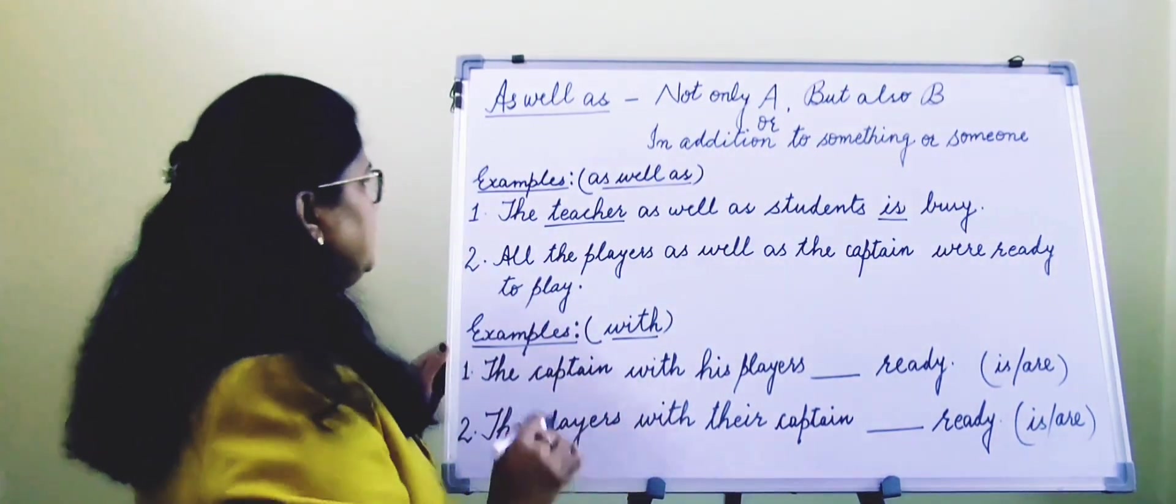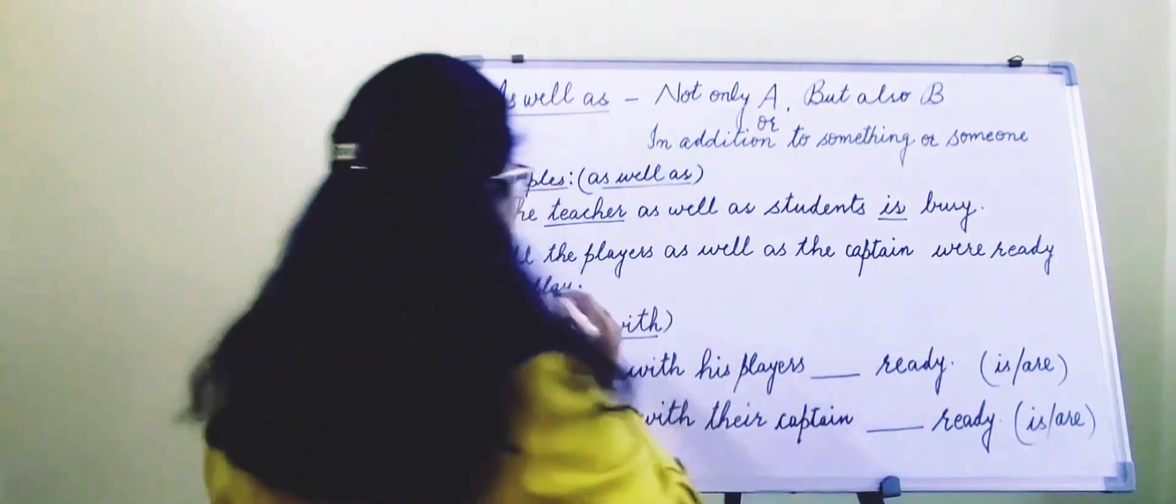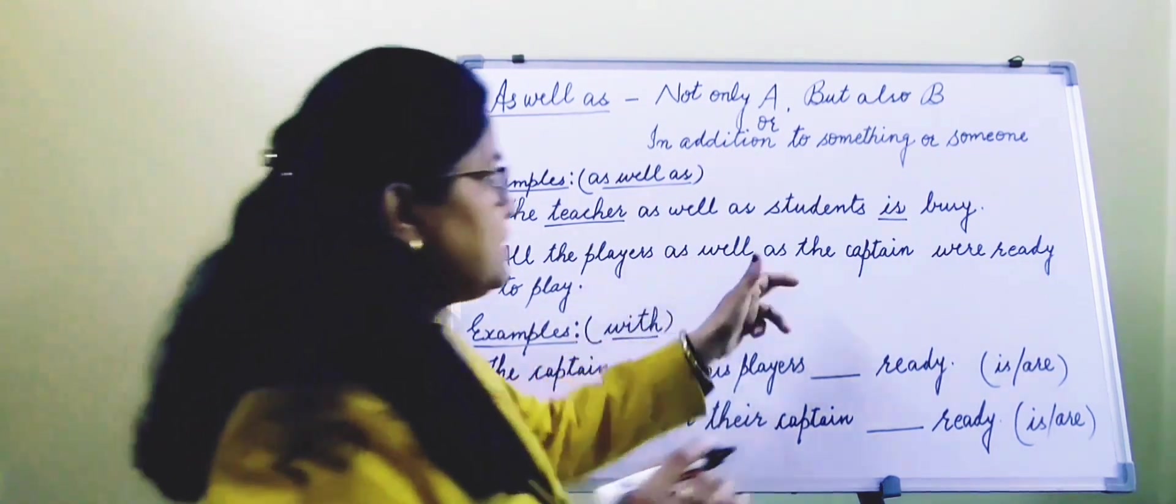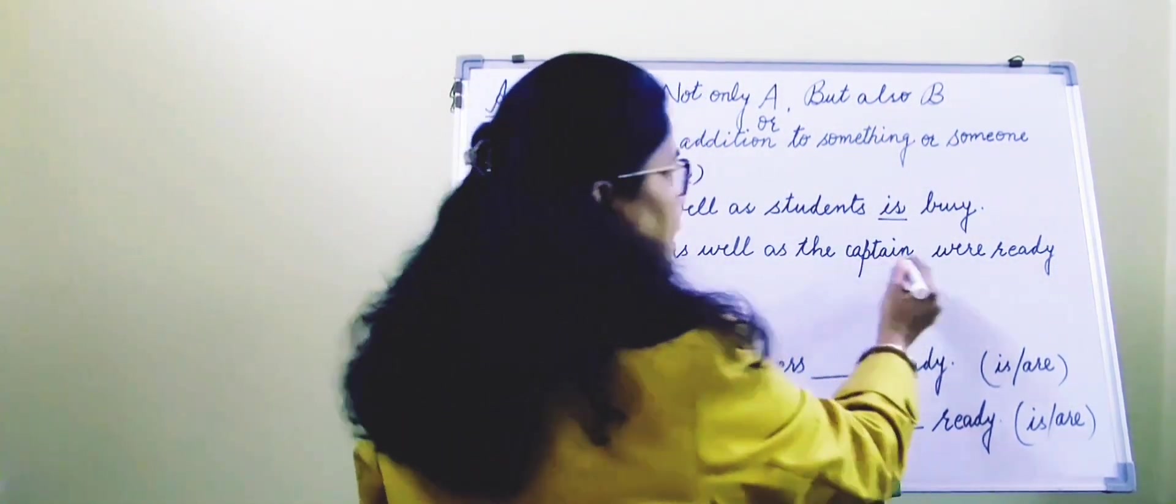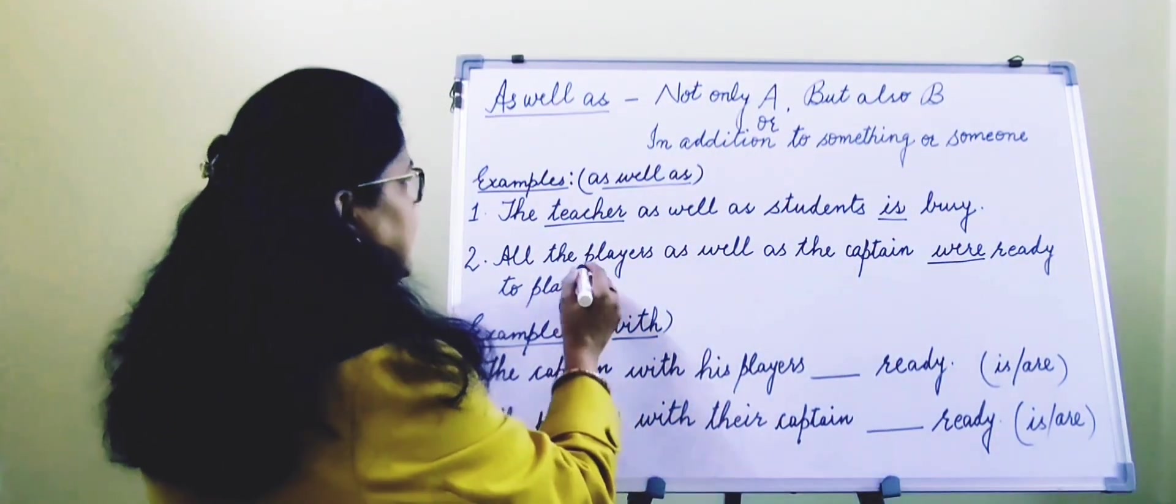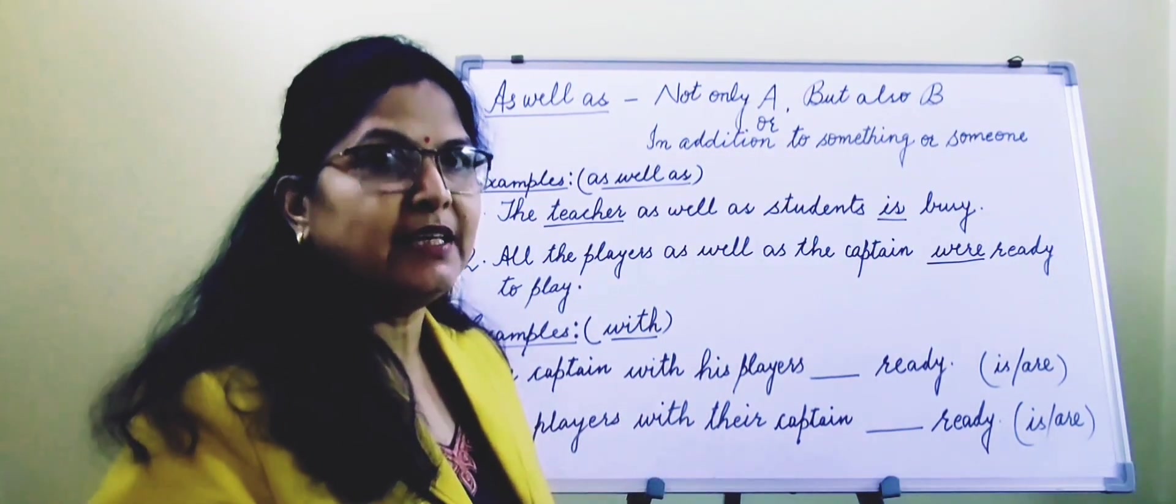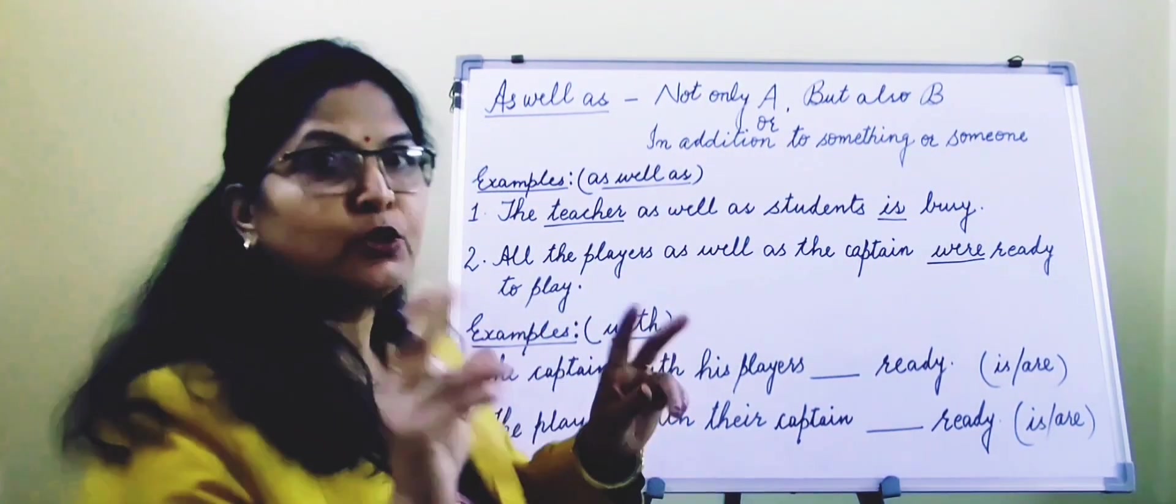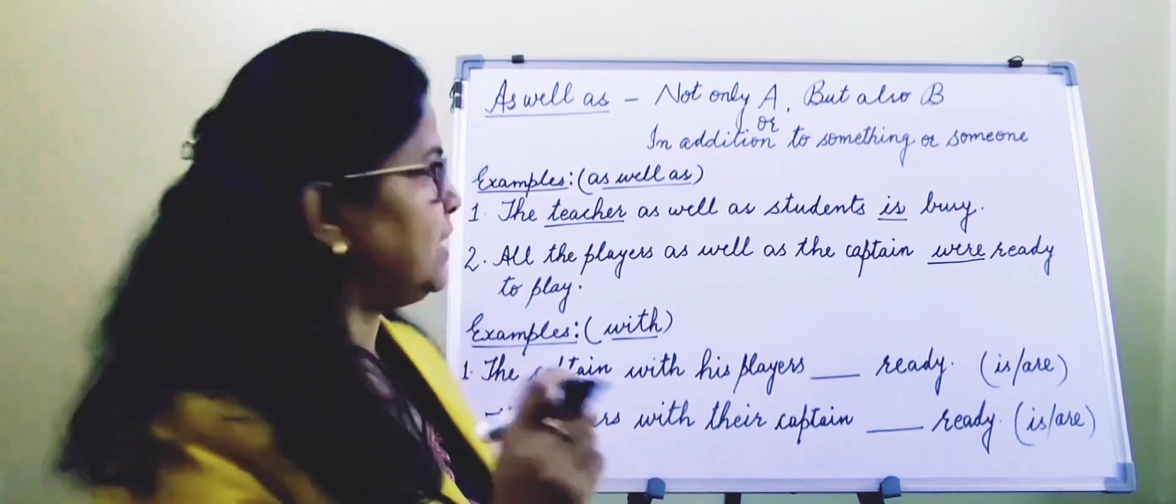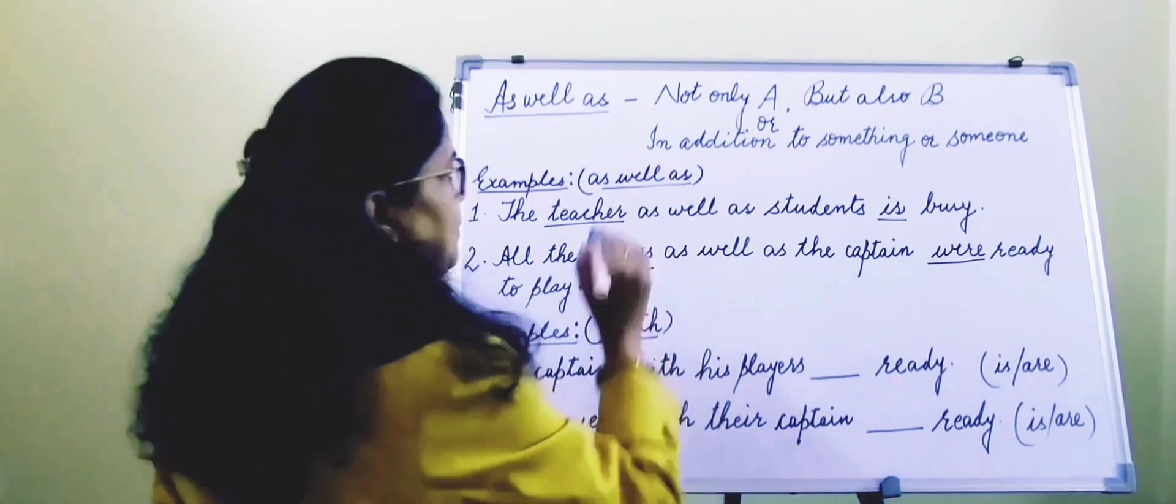Let's see the second example. All the players as well as the captain were ready to play. All the players, plural form, as well as the captain, singular form. But verb is in plural because the first subject is players which is plural. So what did you understand here? That when we join two subjects with as well as, the verb will always agree with its first subject.